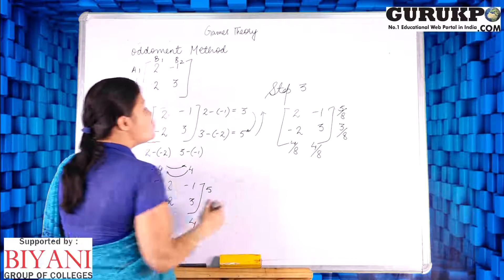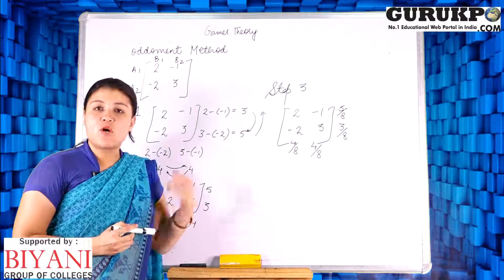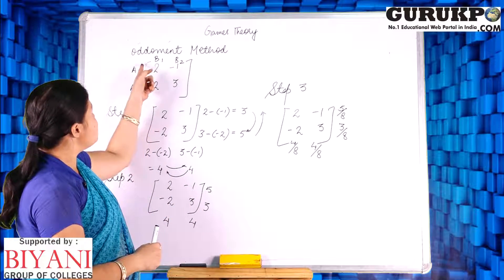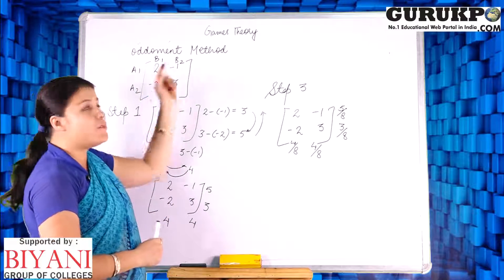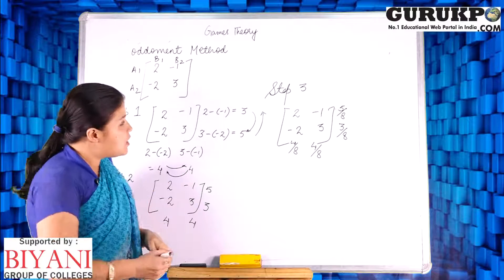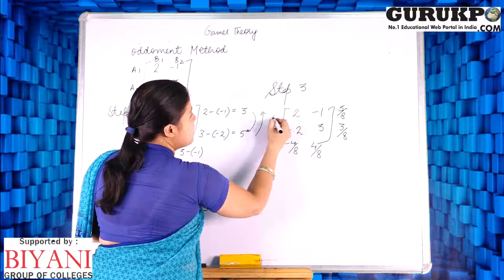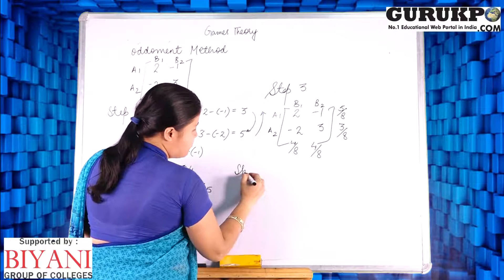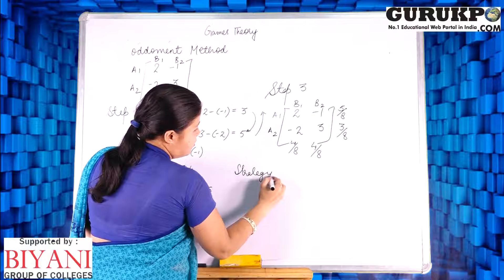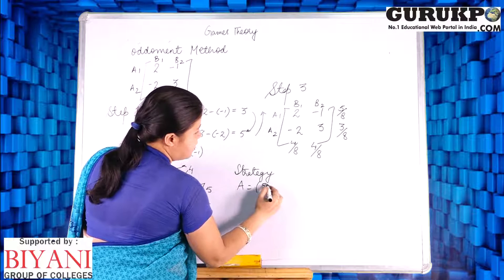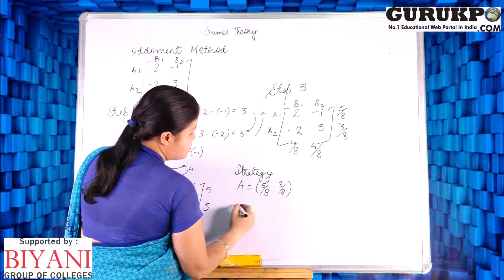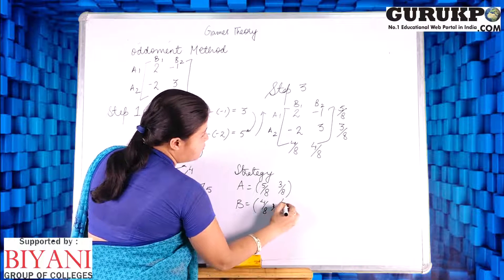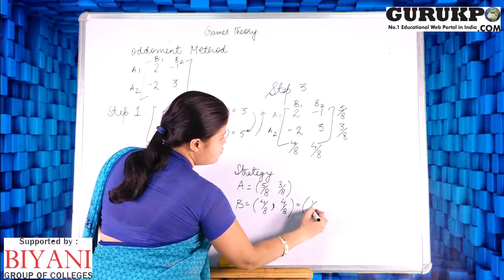As I have already discussed in my previous video lectures, in game theory we need to find three things: the strategy for the row player, the strategy for the column player, and the value of the game. Our row player is A1, A2 and the column player is B1, B2. The strategy for the row player is 5/8 and 3/8, and the strategy for the column player is 4/8 and 4/8, which simplifies to 1/2 and 1/2.